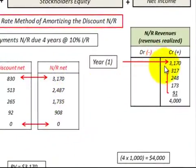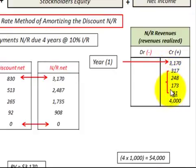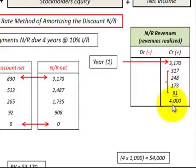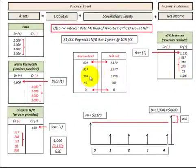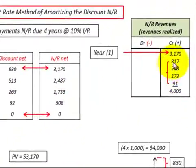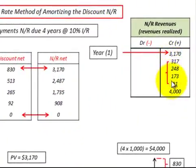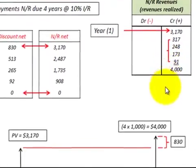For the next four years, we have to recognize interest earned — or interest revenue — on that notes receivable. Here I use the effective interest rate method. You add up that interest revenue with the present value realized in the notes receivable and you get $4,000, which balances with our notes receivable amount of $4,000. Let's look at how this interest revenue is calculated.